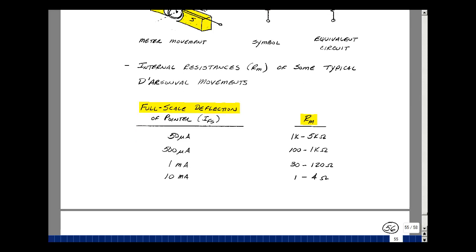For full-scale deflection of the pointer, if you had a 0 to 50 microamp deflection, you might have resistance between 1k and 5k. 500 microamp full-scale deflection: 100 to 1000 ohms. 1 milliamp full-scale deflection: 30 to 120 ohms. 10 milliamp full-scale deflection: 1 to 4 ohms.